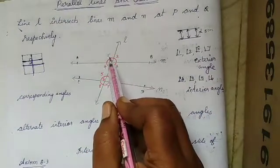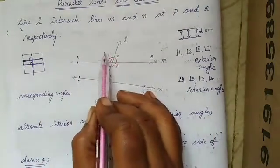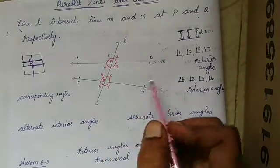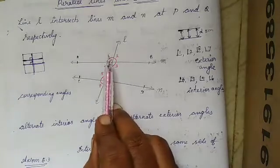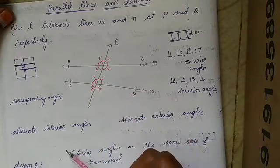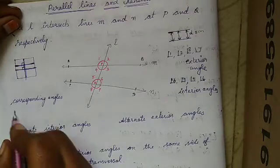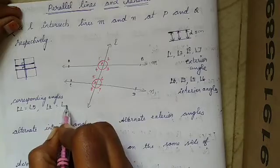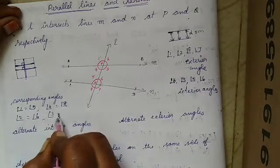Angle 1 is equal to angle 5. The similar situation holds here — how much angle you have at position 1, the same will be at position 5 when these two lines are parallel. Corresponding angle pairs are: angle 1 and angle 5, angle 2 and angle 6, angle 4 and angle 8, and angle 3 and angle 7. So: angle 1 equals angle 5, angle 4 equals angle 8, angle 2 equals angle 6, and angle 3 equals angle 7.